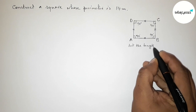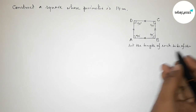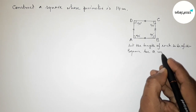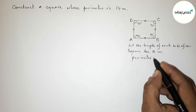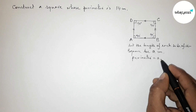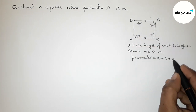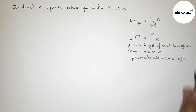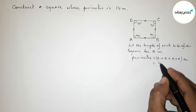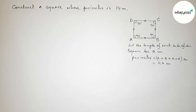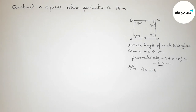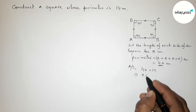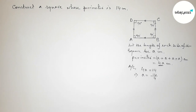Let the length of each side of the square be 'a' centimeters. The perimeter is found by adding all the sides, so perimeter equals 4a. According to the condition, this perimeter must equal 14 centimeters, so 4a = 14.